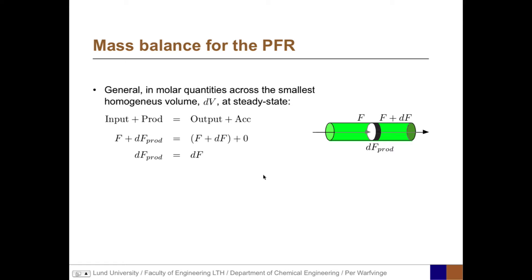Considering this small slice, the input flow is the molar flow F, and there is also a small production of substance within the slice dV, called dF_prod. That equals the output, which is the input flux plus a small change dF, plus zero at steady state. This boils down to: dF_production equals dF, which is the change in molar flow.